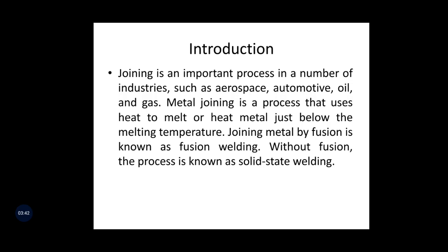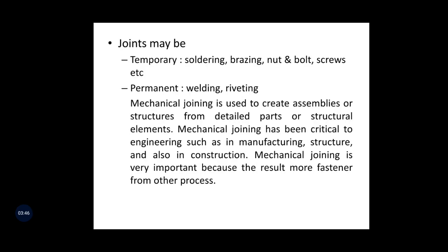Joints may be temporary or permanent. Temporary joints include soldering, brazing, bolt-and-nut assemblies, and screws — these can be broken relatively easily, even by hand. Permanent joints are welding and riveting. Without applying heavy external force, you cannot break a welded joint — welding becomes a permanent joint.